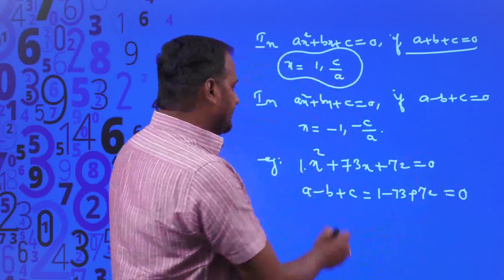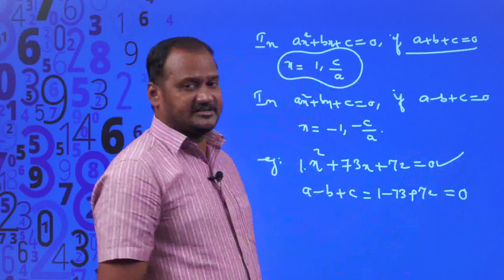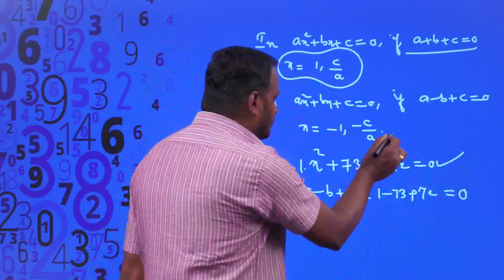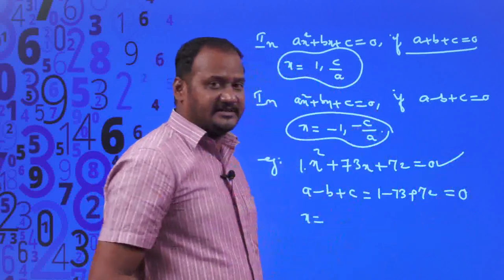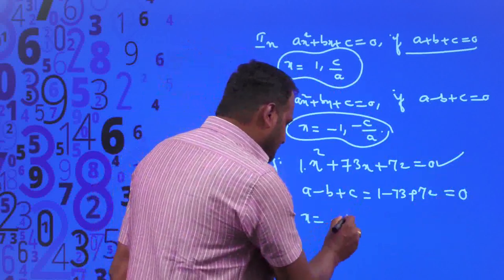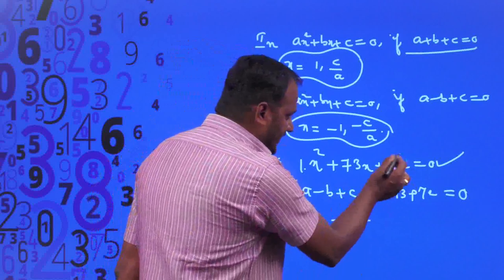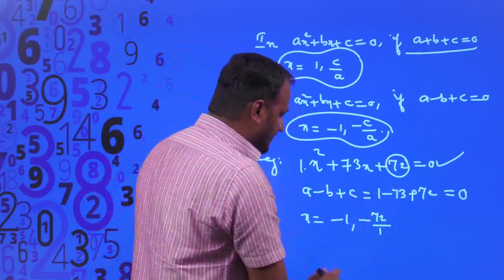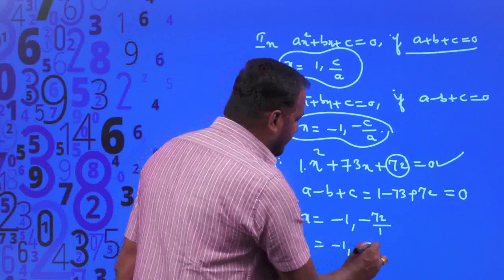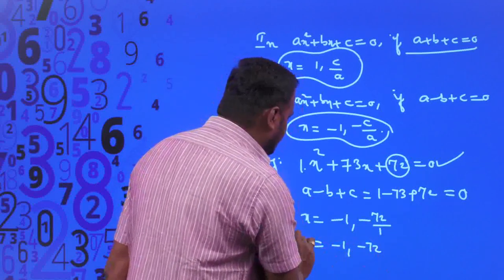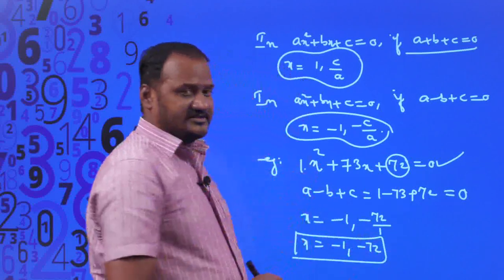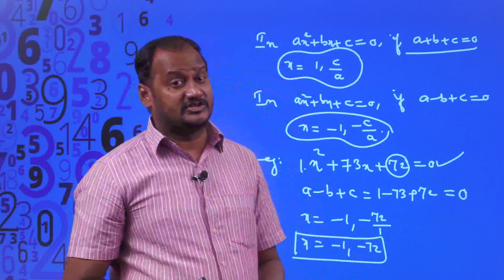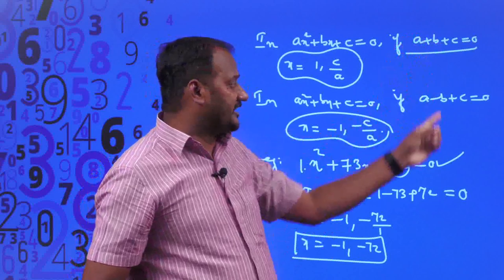Therefore, the roots of x² + 73x + 72 = 0 are x = -1 and x = -C/A, that is -1 and -72/1, which equals -1 and -72. By using these strategies, we can easily figure out the roots of the given quadratic equation under these two conditions.